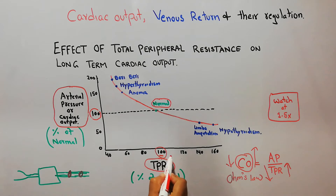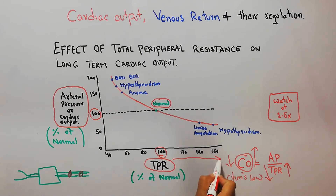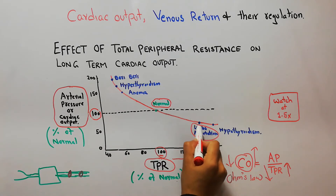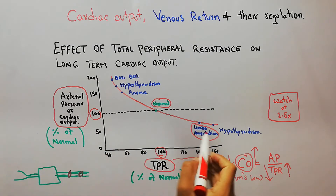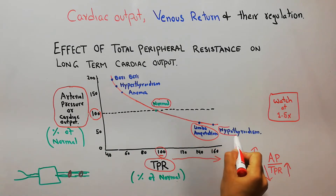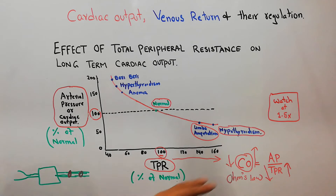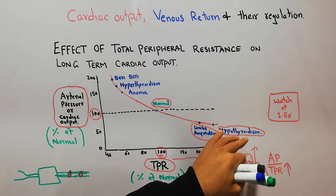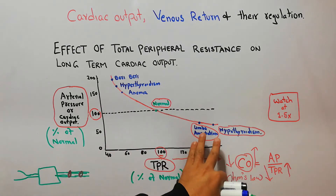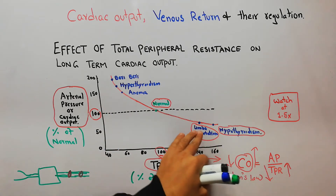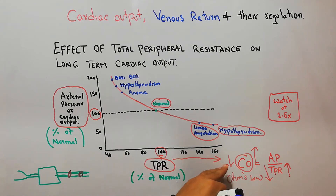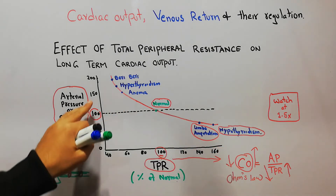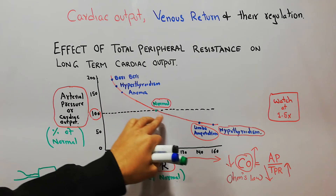When total peripheral resistance increases — for example if both arms and legs of a person are removed (limb amputation), or in hypothyroidism where thyroid hormones secreted from the thyroid gland are decreased — the total peripheral resistance has increased, and this increase leads to a decrease in cardiac output.